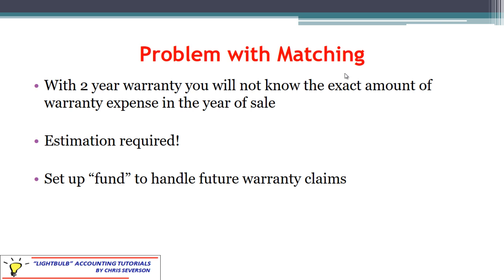We're setting up a cushion account so that we can handle the warranties as they come through without having to record warranty expense again. This fund is a liability account, unlike the bad debt expense situation, which used an allowance for doubtful accounts — a contra-asset account.